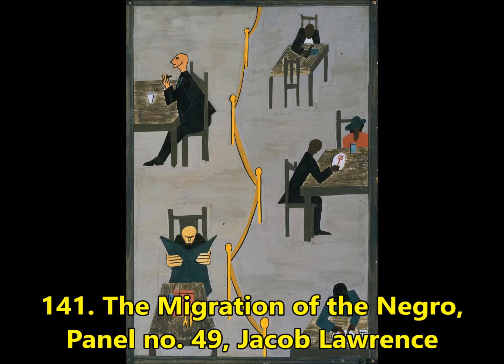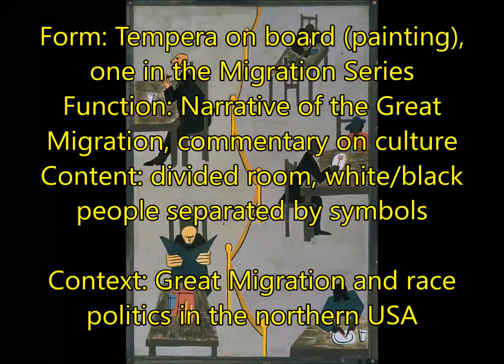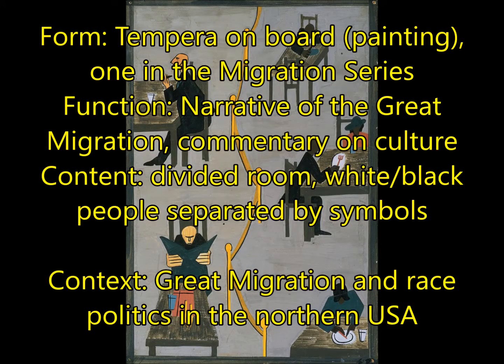Next, we're going to have Jacob Lawrence's The Migration of the Negro, which is panel 49 from a series entitled The Migration Series. For form, this is tempera on board — a painting — and you need to know that it is one in a very large series. For function, that series is telling the story or narrative of the Great Migration, which is the movement of Black U.S. citizens from the South to the North. It's a commentary on culture at the time.